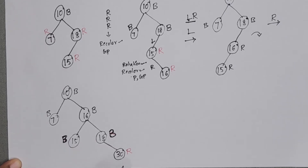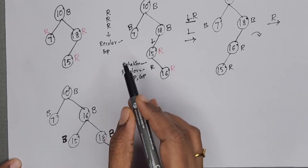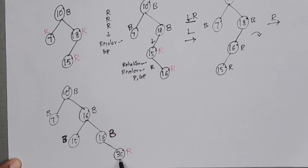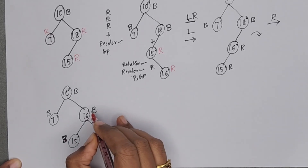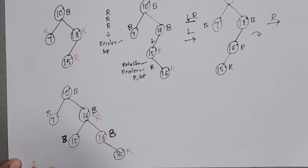Next, recolor the grandparent 16: change it from black to red. Recheck: the parent of 16 is black, so no problem. We can now add the next element, which is 25.